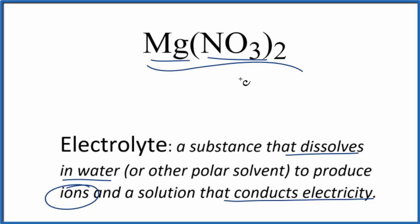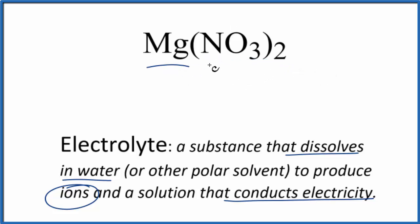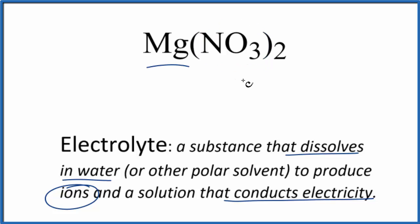For magnesium nitrate, we have magnesium — that's a metal — and then we have the nitrate ion, NO₃, which is a group of non-metals. So we have a metal and non-metals, which means this is going to be an ionic compound.